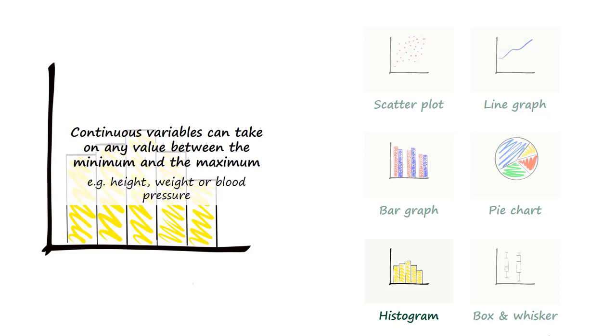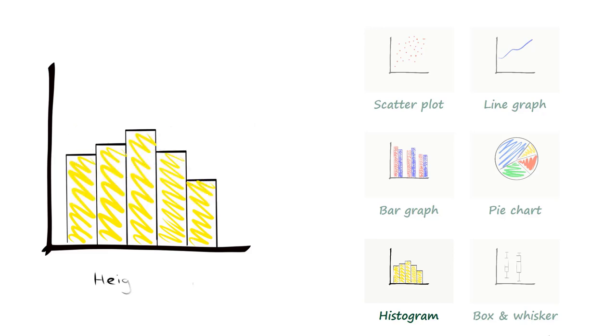In this example, we are plotting the distribution of heights. The minimum value is 150 centimetres. The maximum value is 200 centimetres.